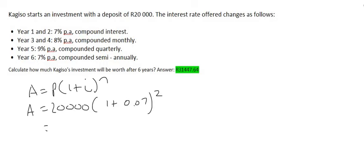Okay, and that would give, this question is Kajiso. That's going to give him a total of, nice round number, 22,898 Rand. So this is how much Kajiso will have after two years.